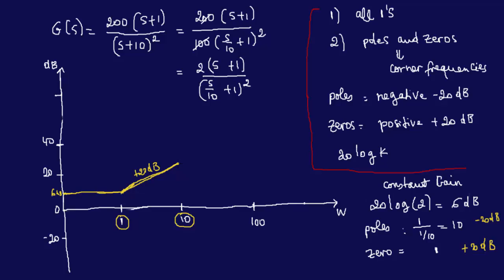The next corner frequency is 10. What do we have at 10? A pole. A pole is minus 20 dB. However, if you have a second order pole, you multiply that by 2. So because the pole is squared, we multiply this slope by 2 — second order means minus 20 times 2. That's minus 40 dB. You're not going to draw a minus 40 slope directly; you add the previous slope. So minus 40 plus 20 is minus 20.